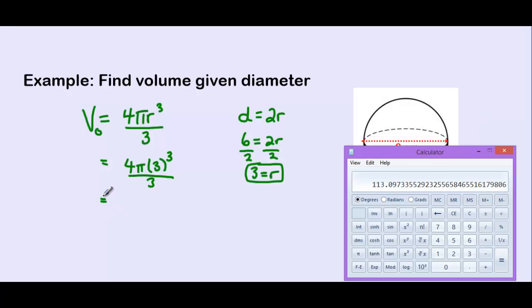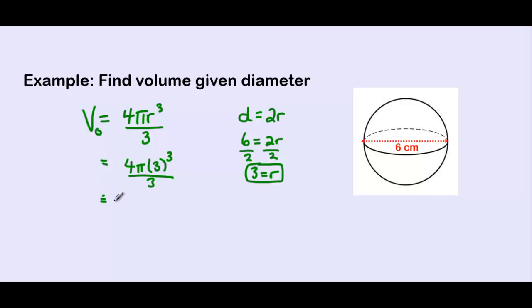So when we want to round, we're going to put a dot over our equal sign and round this to one decimal place, 113.1 centimeters, and our units are cubed because we're talking about the capacity inside a 3D object.